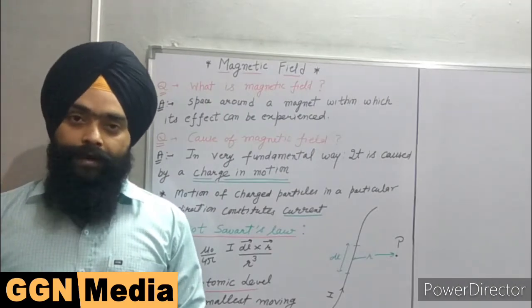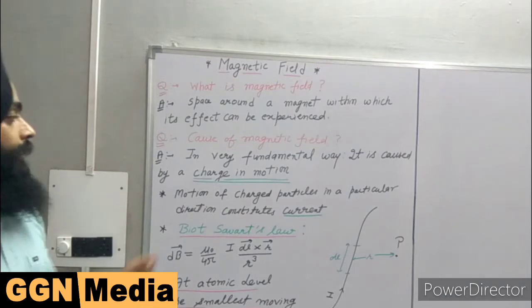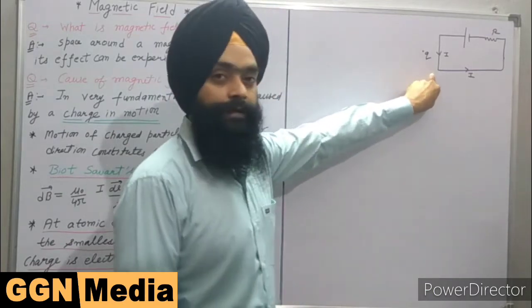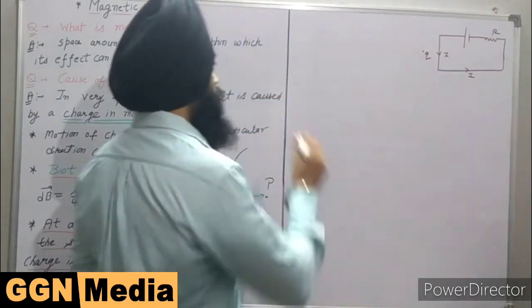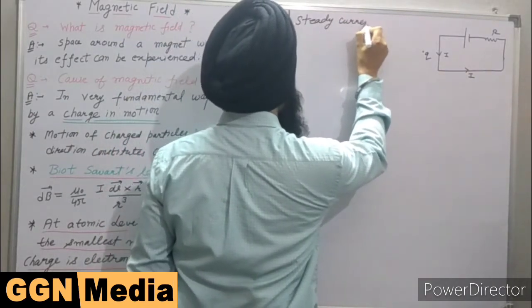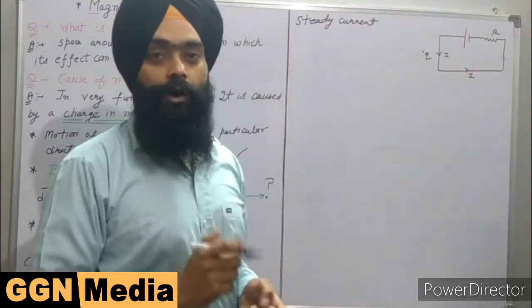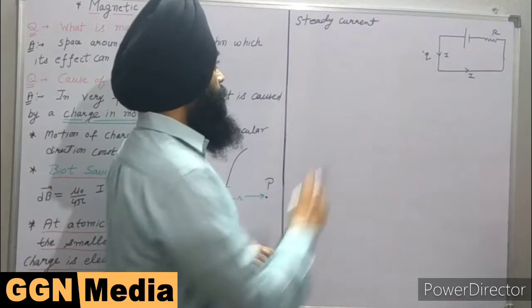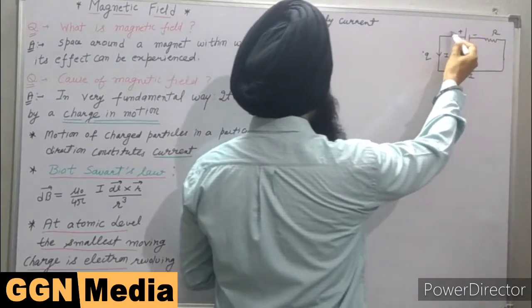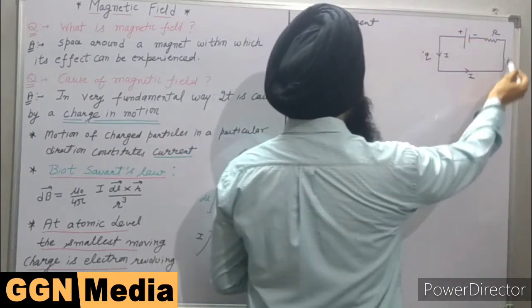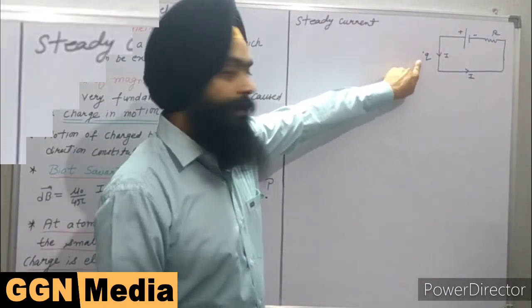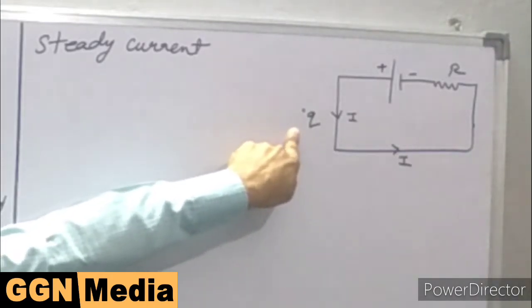Whenever a charge is in motion, it produces a field that is called magnetic field. Let us discuss this in detail. Here we have a circuit through which a steady current is flowing. Steady current means the current is not changing with time. For steady current, we have applied the DC battery here. This is the positive terminal, this is the negative terminal, and the current I is passing through this circuit.